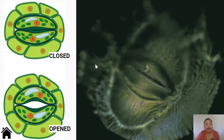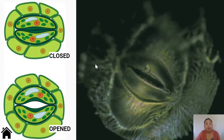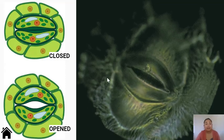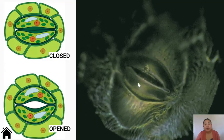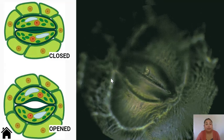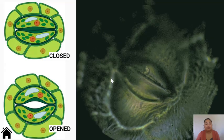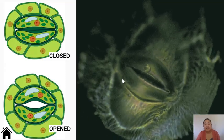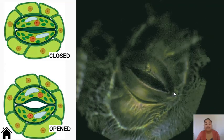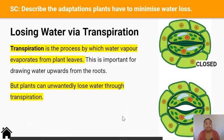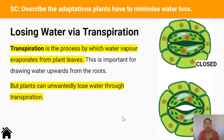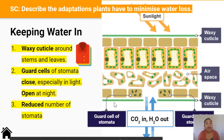Stomata are a structural adaptation — they're a physical feature. They can actually open and close, as shown in this GIF, depending on the abiotic factors the plant experiences. When stomata open, carbon dioxide enters the plant and water vapor exits. When stomata close, there's no movement of carbon dioxide and no movement of water vapor. The process by which water vapor evaporates from plant leaves is called transpiration. It helps the plant draw water up from its roots, but too much transpiration is not a good thing.